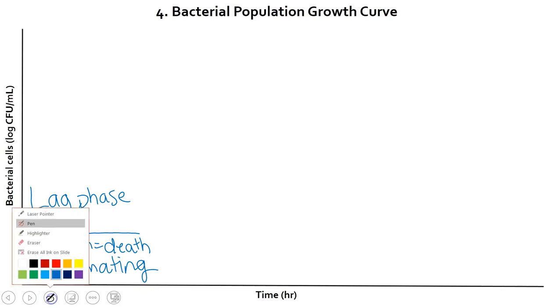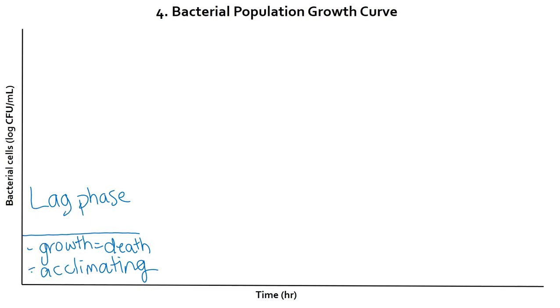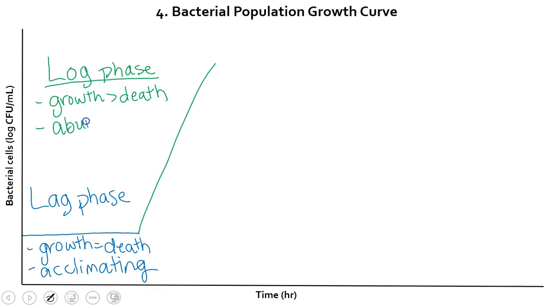However, after they've gotten used to their new environment, growth takes off. We call this our log phase. This is the phase where the math that we just did on the previous three slides actually applies. So in this phase, they are growing at a much faster rate than they are dying. They're able to do this because they have abundant resources and nothing is stopping them. So the population grows.